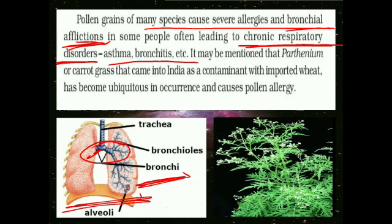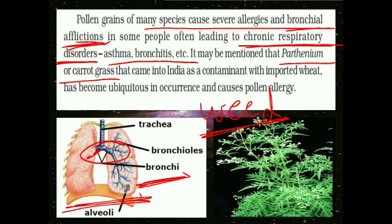It may be mentioned that Parthenium, ya phir carrot grass, ek tarah ka weed hai. Weed — jo bhi unwanted plants grow karte hain, aapne normally apne ghar ke aaspaas ya kisi bhi khaali jagah par bahut saari weeds ughte dekhi hongi, jinhe normally hum grow nahi karte, woh apne aap grow ho jaati hain. Use hum weed bolte hain, unwanted plant. Usi ka ek example hai Parthenium.